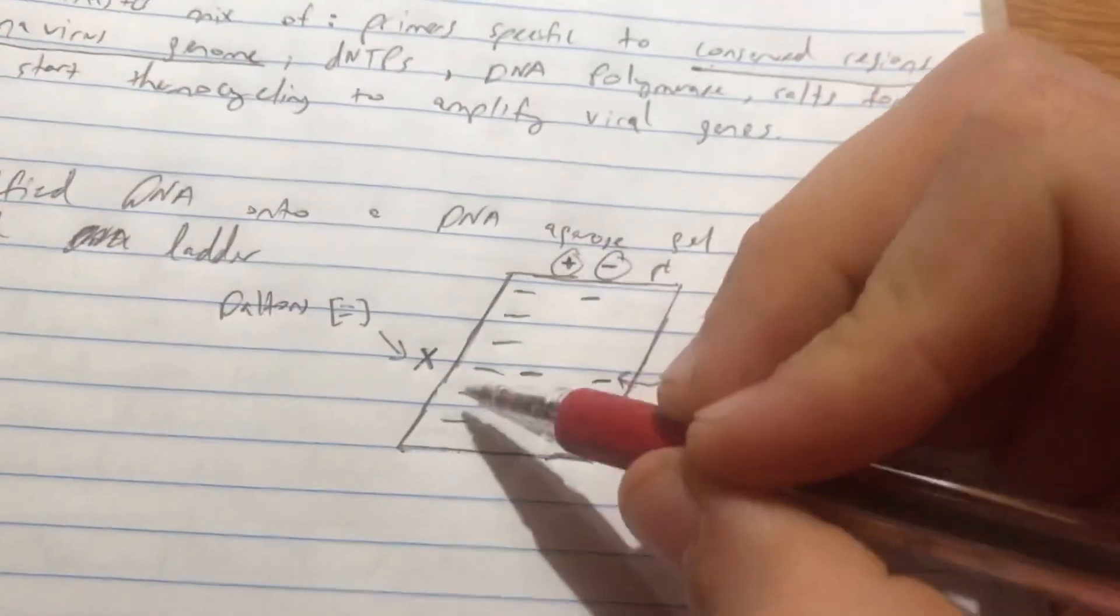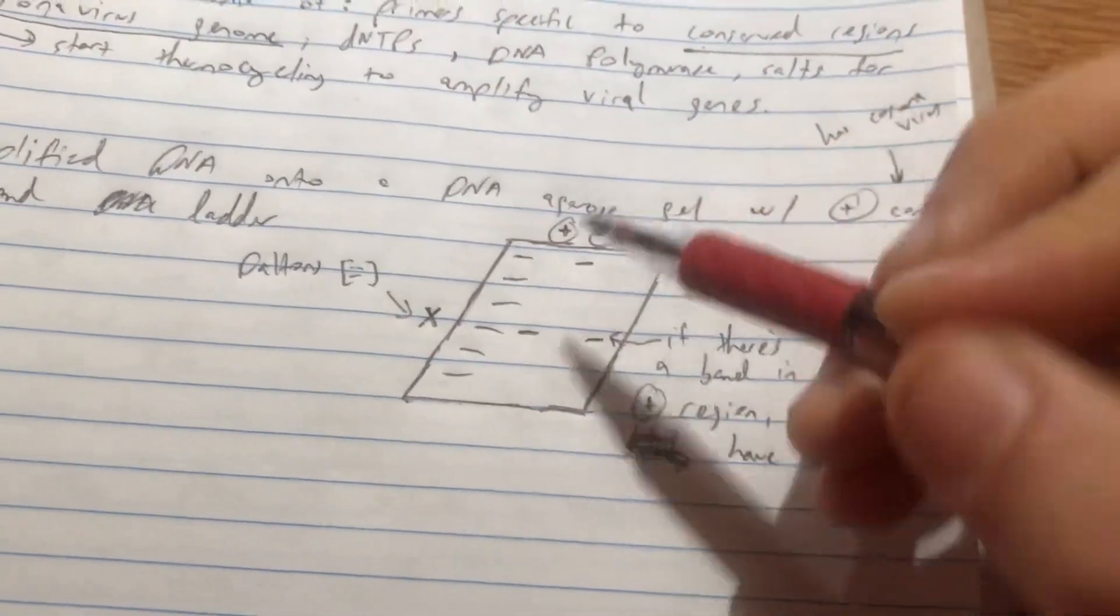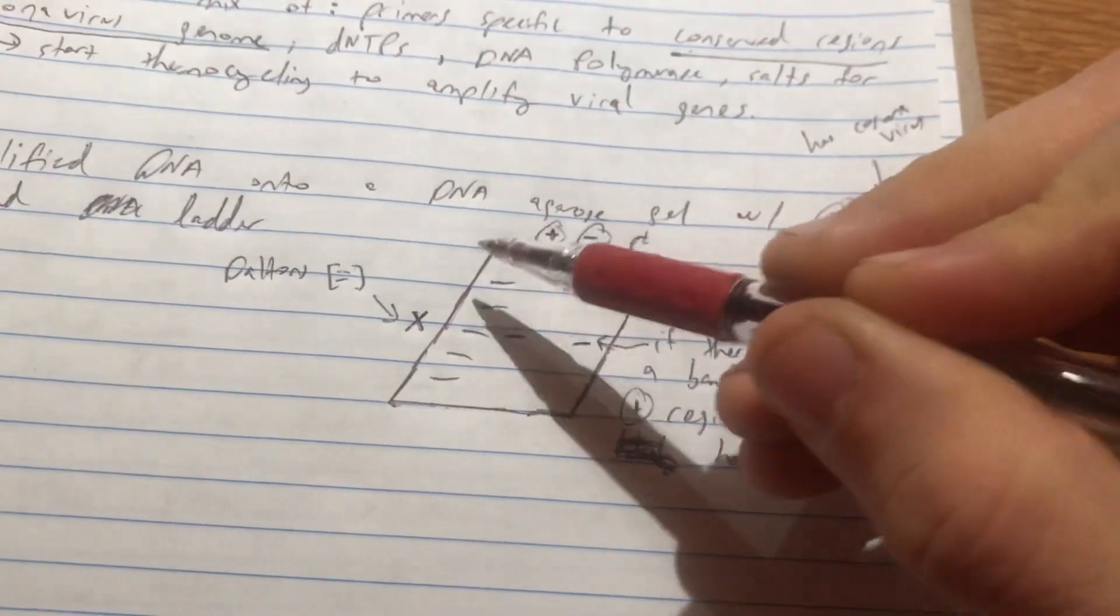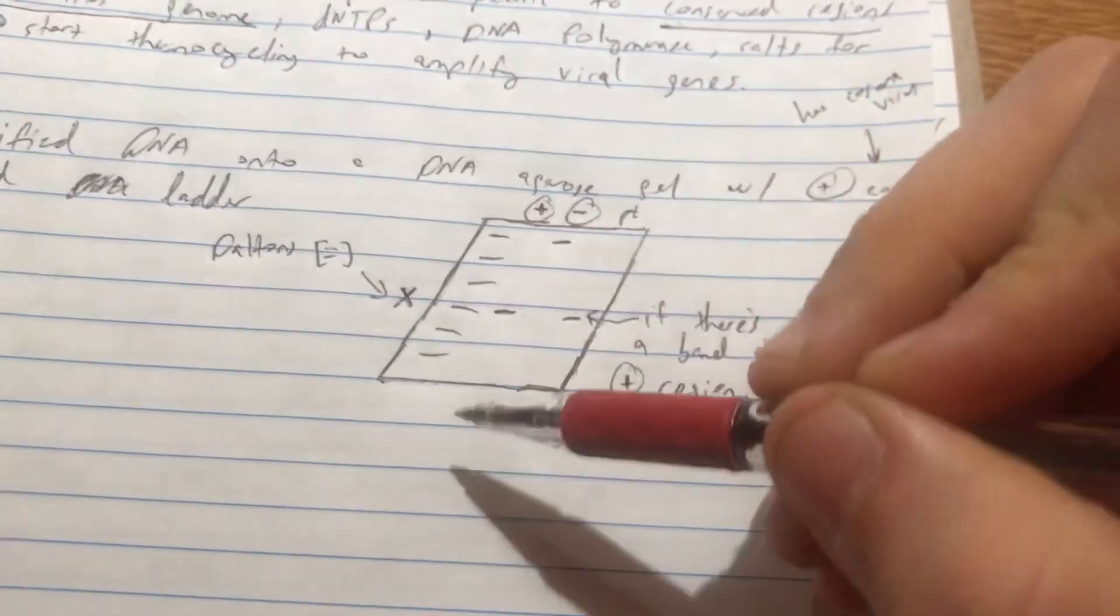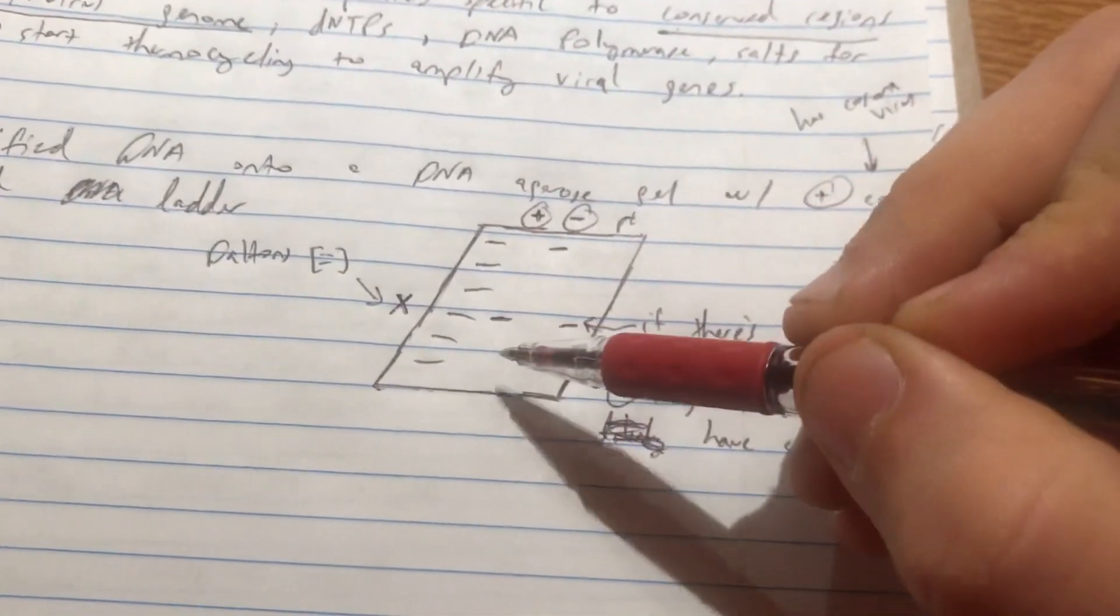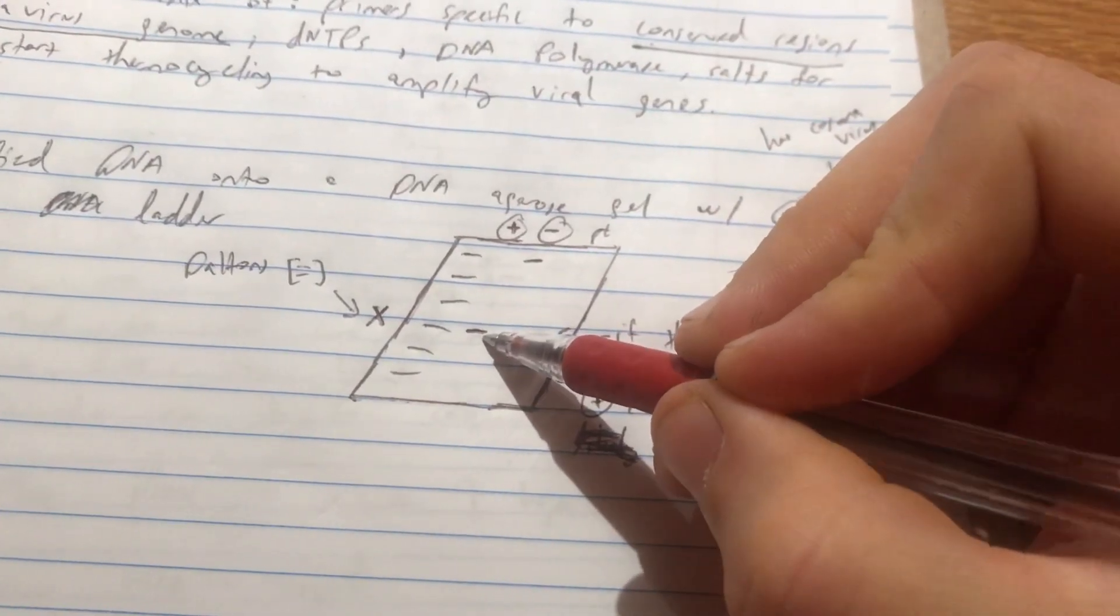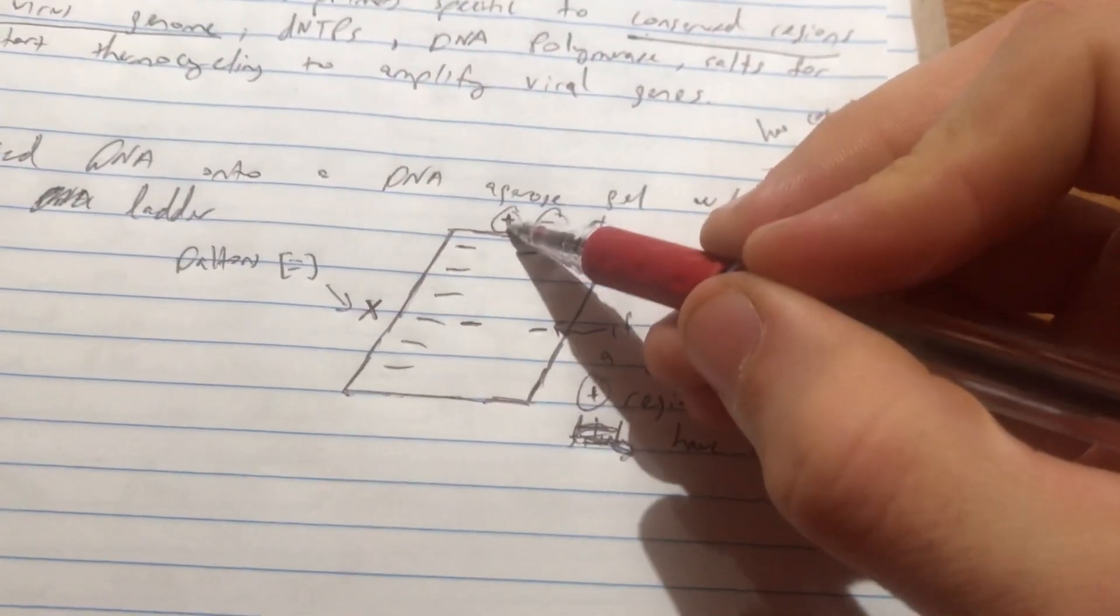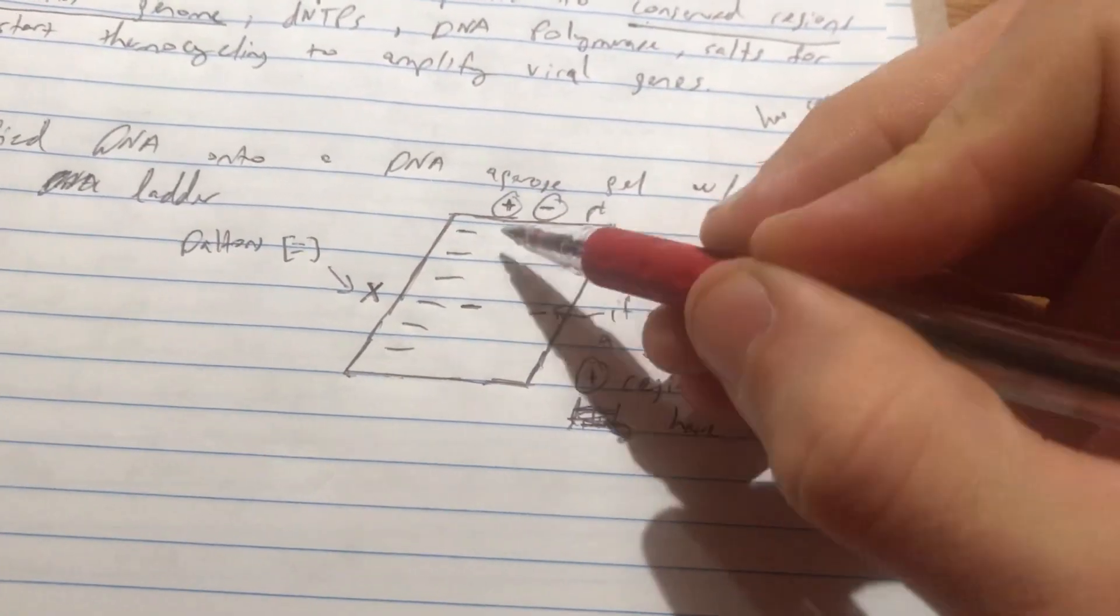And so this ladder here has units of Daltons. They're essentially units of mass. Heavier things are going to take longer to get through this gel because the gel is very viscous. So the lighter stuff's going to be here. We do know that there's a certain size of the coronavirus genome that we are looking for. This makes up our positive control. Our negative control will have another band that we are familiar with.